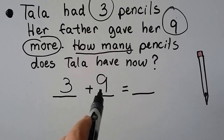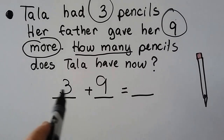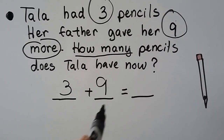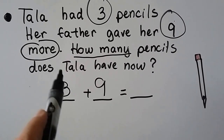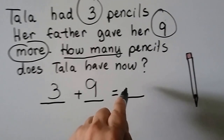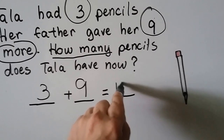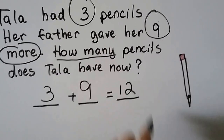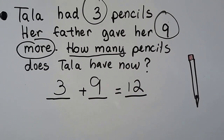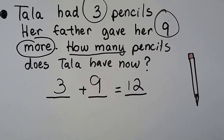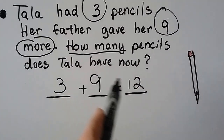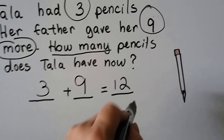We start at the nine and count on — nine, ten, eleven, twelve. Twelve what? We need to label it: twelve pencils.